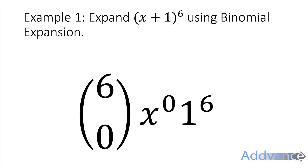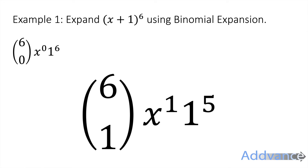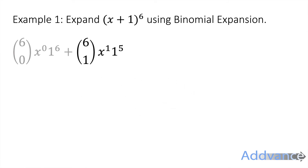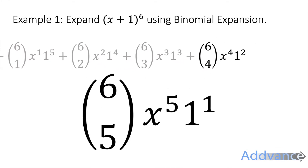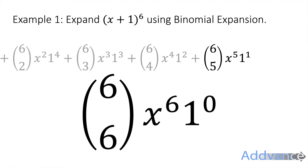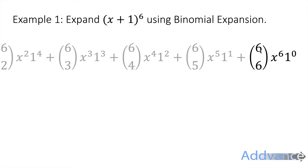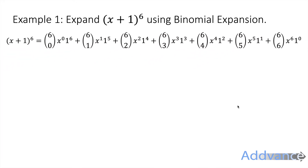We start with r = 0 and work upward. The terms go: 6C0, x⁰, 1⁶; then 6C1, x¹, 1⁵; and so on, incrementing r each time up to r = 6. You should see a clear pattern: the powers of x count up (0,1,2,3,4,5,6) and the powers of 1 count down (6,5,4,3,2,1,0).